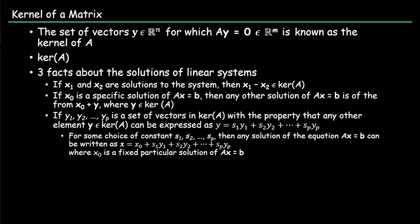Then any other solution in the equation AX equals B can be written as X equals X0 plus S1Y1 plus S2Y2 plus all the way to SPYP, where X0 is the fixed particular solution of AX equals B.